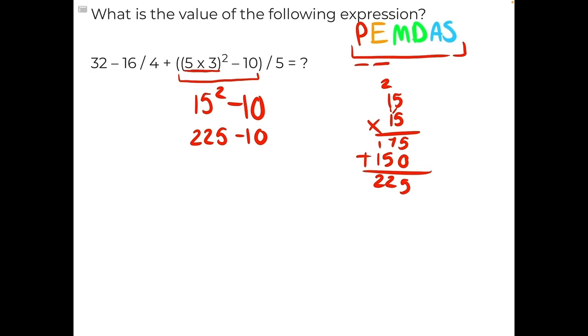So now the last step, there's no multiplication or division, we can now move on to addition and subtraction. In this case subtraction: 225 minus 10 will give us 215.